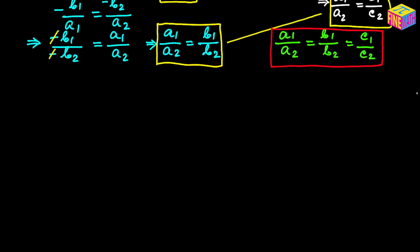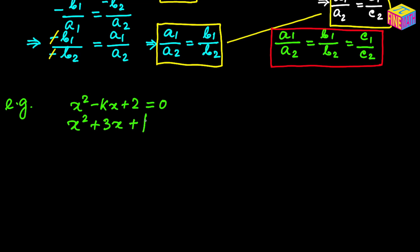Now let's take an example and see how to use this theory in practical questions. Suppose we have been given: x² − kx + 2 = 0 as the first equation, and x² + 3x + p = 0 as the second. We have two unknowns k and p, and we are told these two equations have both roots common.